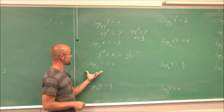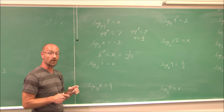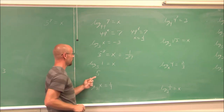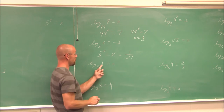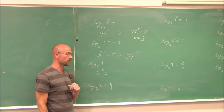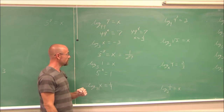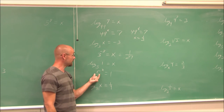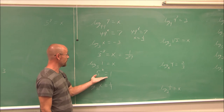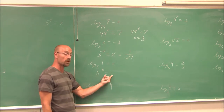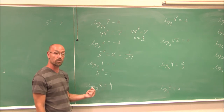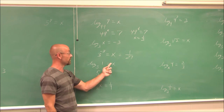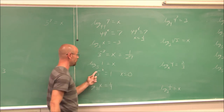Here is an interesting one that is a very common rule of logarithms and exponents. Log base 5 of 1 equals x. In exponential form: 5 to the x equals 1. Any base to the 0 power is 1, so x equals 0. This gives us the rule: the log of any base of 1 will always equal 0.